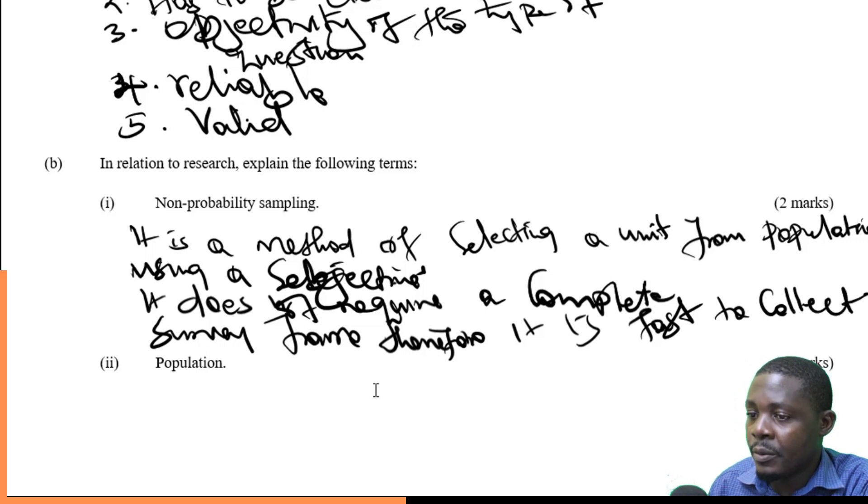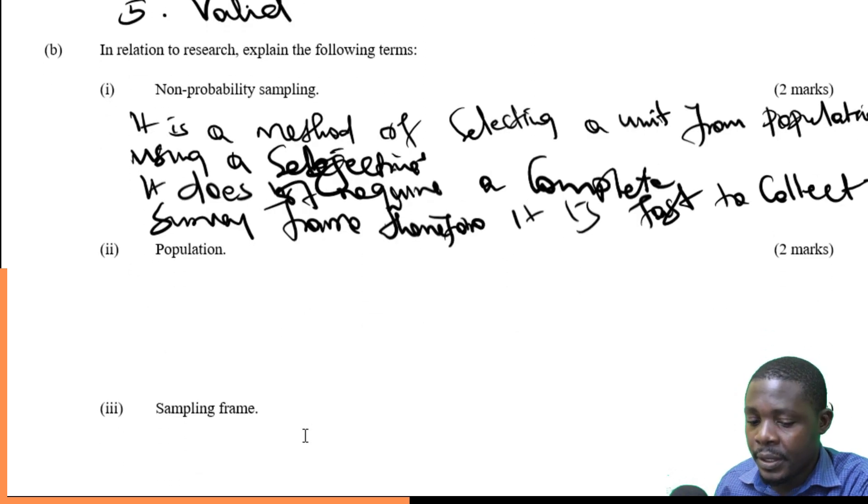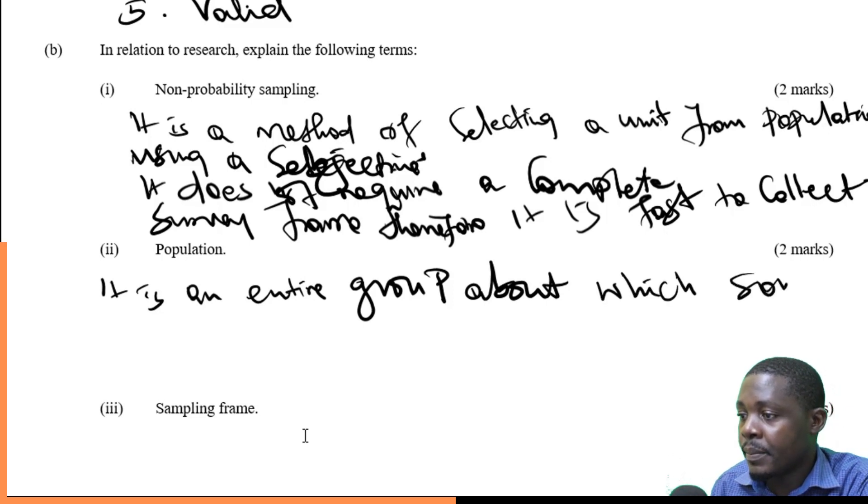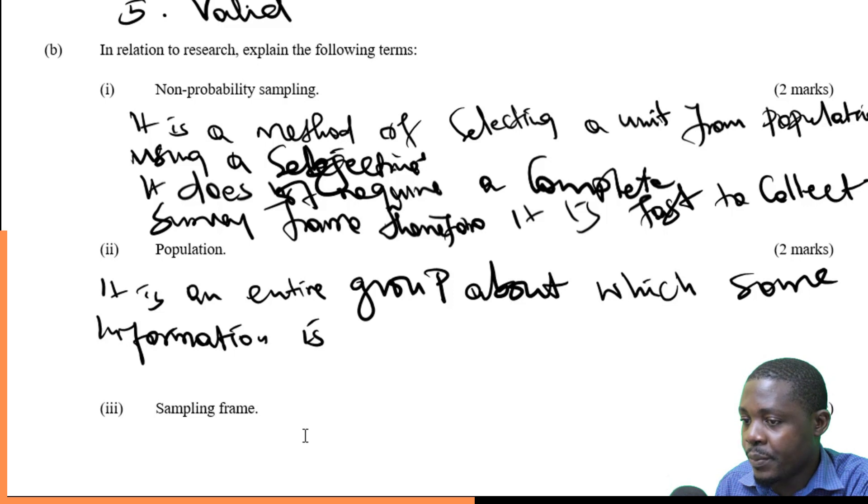Then what of our population? Population we can say that it is an entire group about which information is required to be ascertained.